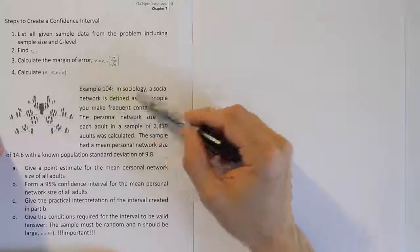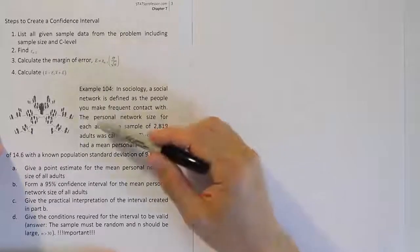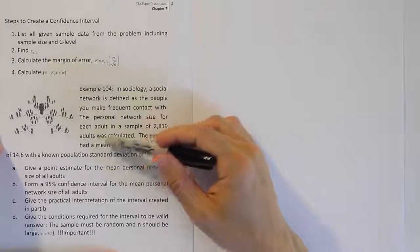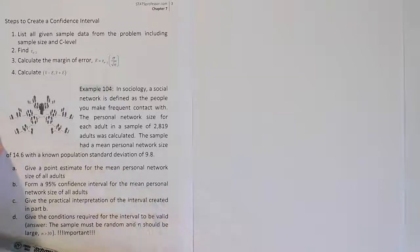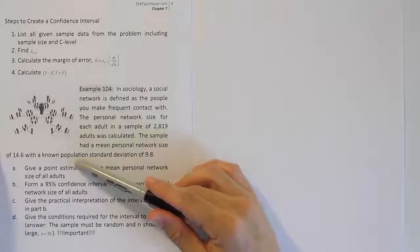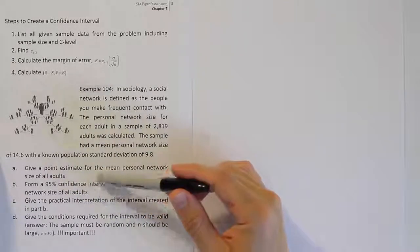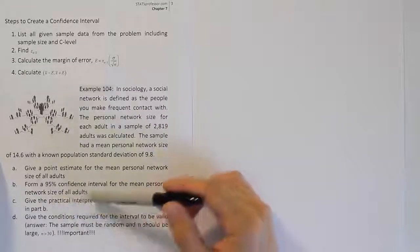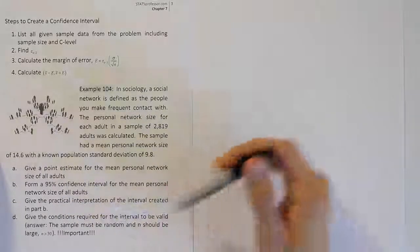In sociology, a social network is defined as the people you make frequent contact with. The personal network size for each adult in a sample of 2,819 adults was calculated. The sample had a mean personal network size of 14.6 with a known population standard deviation of 9.8.